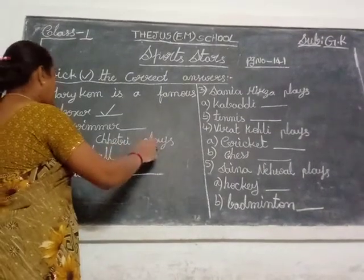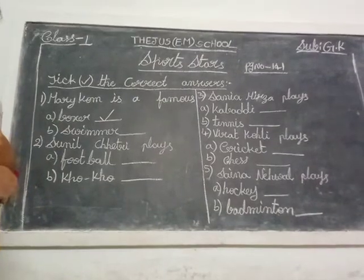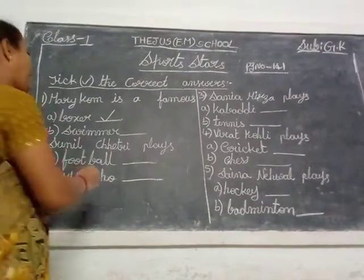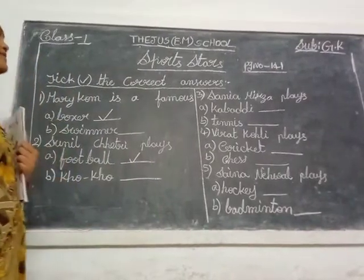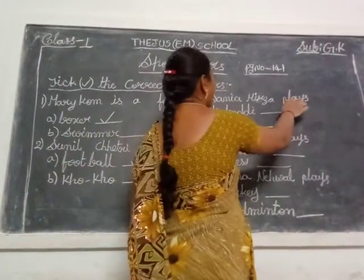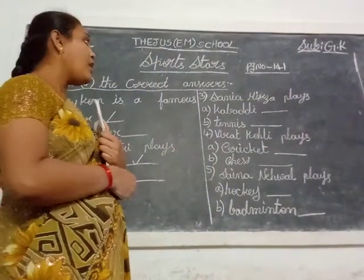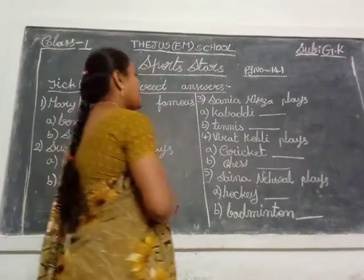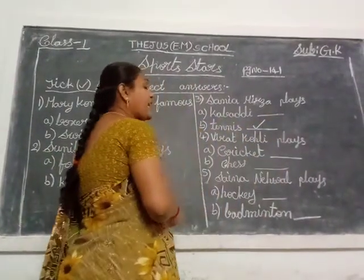Next — Sunil Chhetri plays — already given that one — football. A option. Next, 3rd one, children: Sanya plays — kabaddi or tennis? Tennis. So B option.